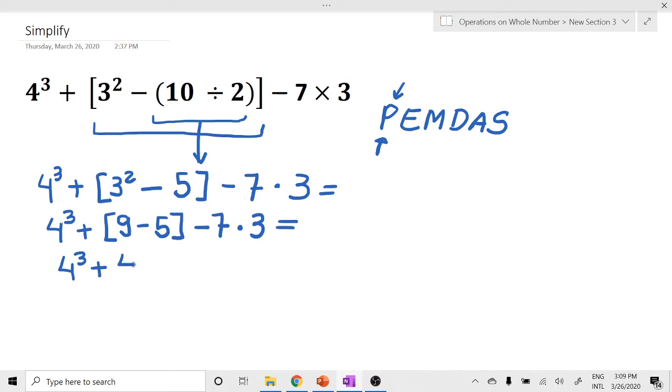I just write down the 4 minus 7 times 3. So we ended up only with operations now. The next one, we eliminate the parenthesis and the bracket, so next we're going to solve the exponents. 4 times 4 is 16, and times 4 is 64. So 4 raised to the third power is 64. Then 7 times 3 is 21.